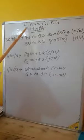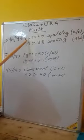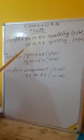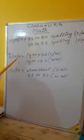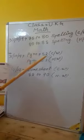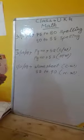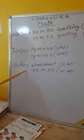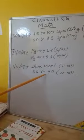Class U.K.G., Subject Math. 30 October 2019: 75 to 80 spelling classwork, 82 to 85 spelling homework. 31 October 2019: Page number 52 classwork, page number 53 homework. Worksheet classwork and homework, 85 to 90.